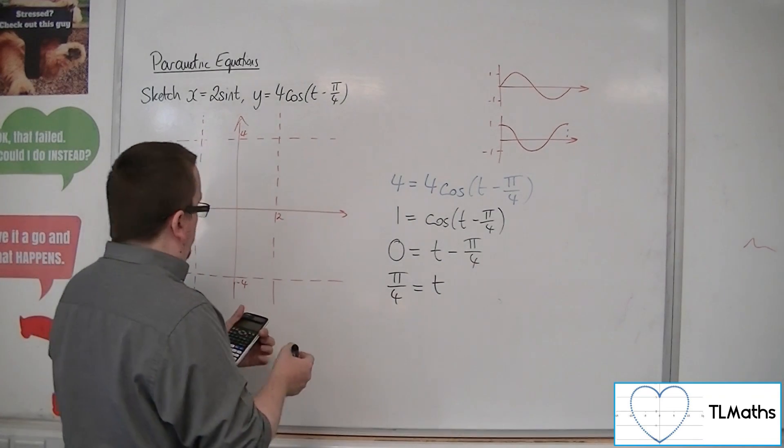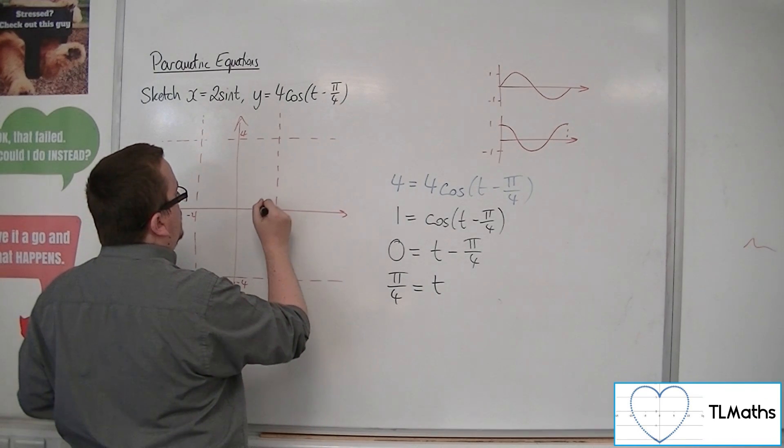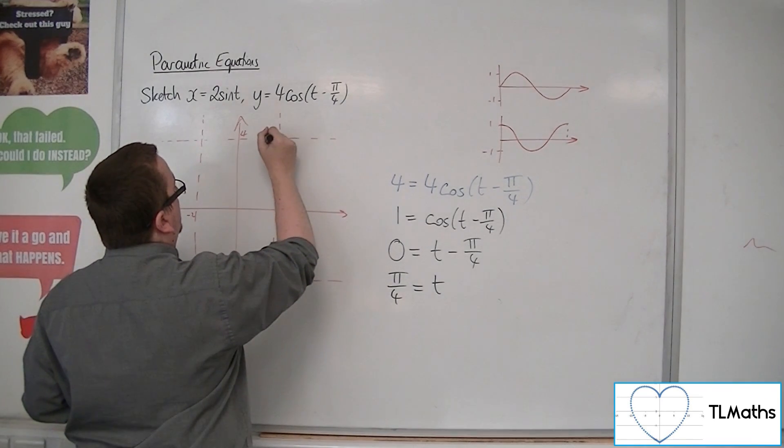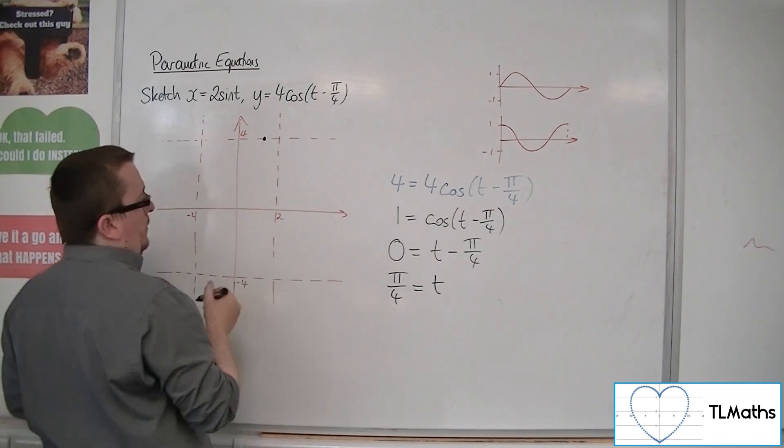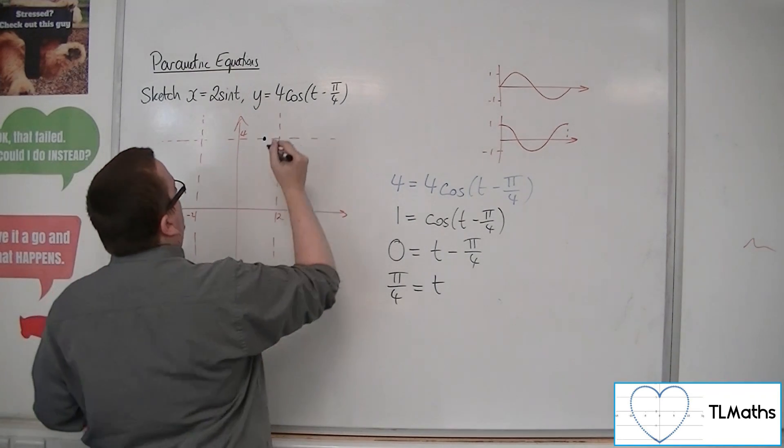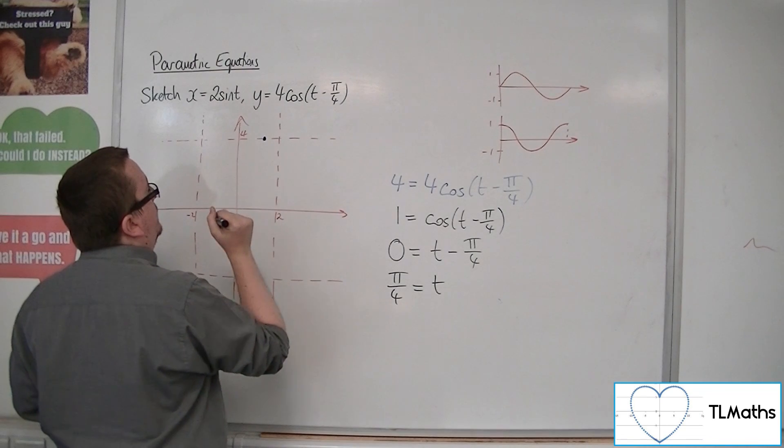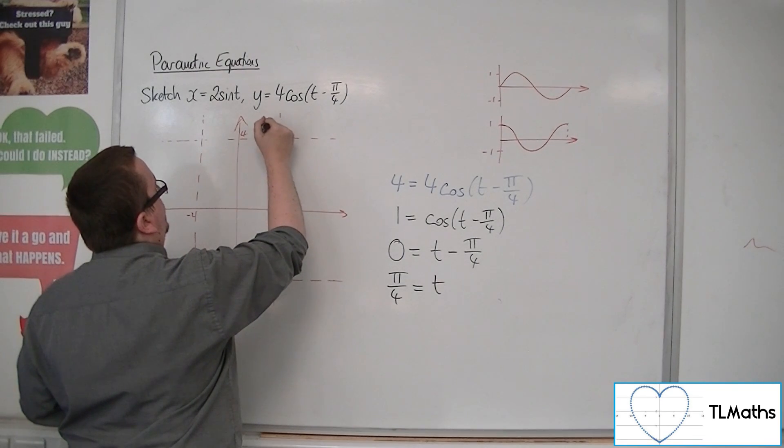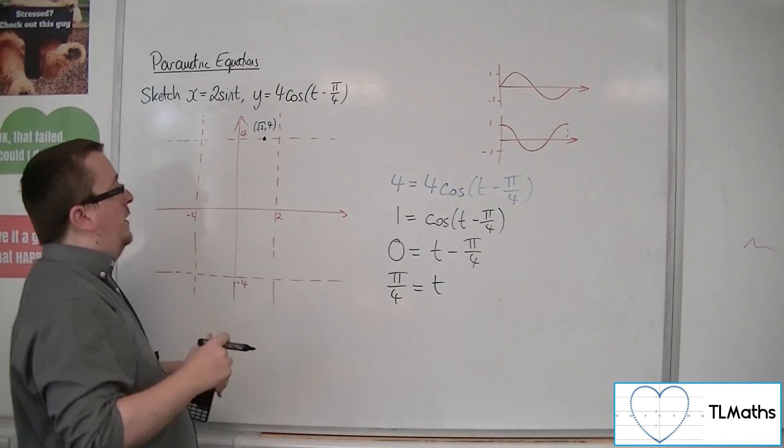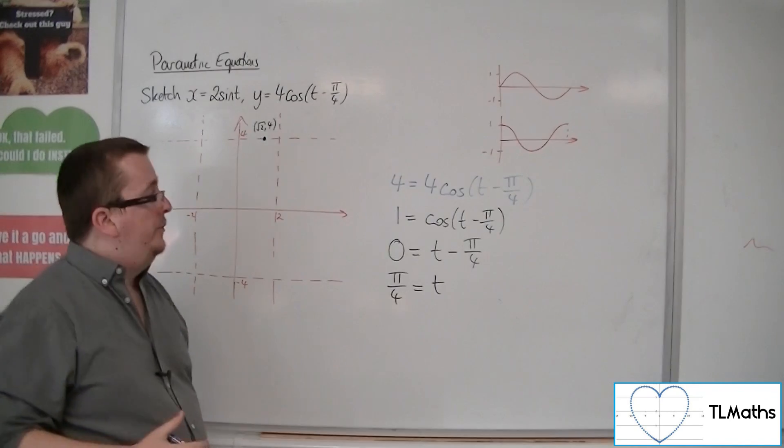So when I look at this point, what is the x coordinate then? So 2 lots of sine of pi over 4 gets me root 2. So root 2 is 1.41. So root 2, 4 is actually the point where it hits on the curve. So that's root 2, 4. That's where it hits the top of my box there.